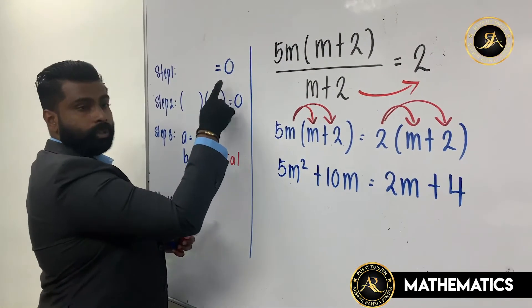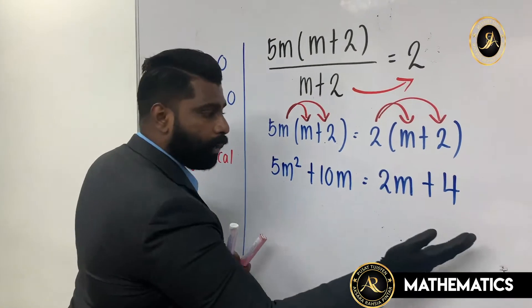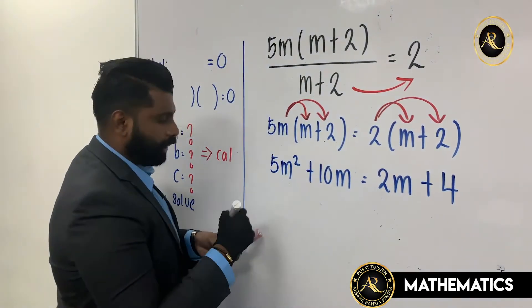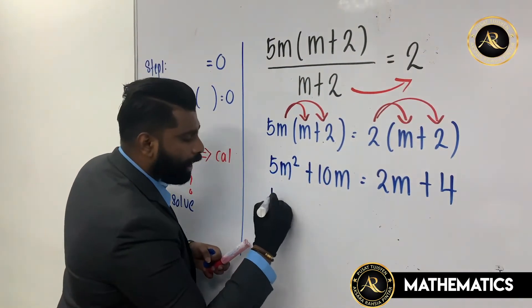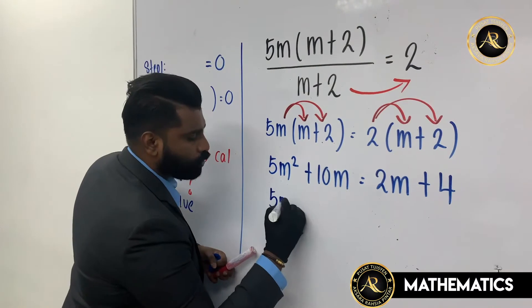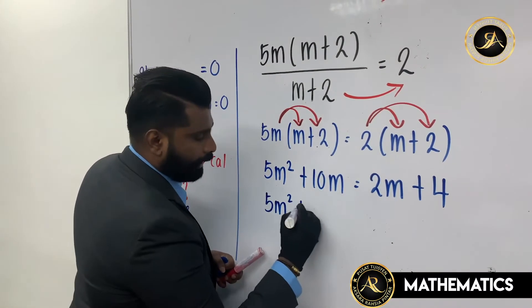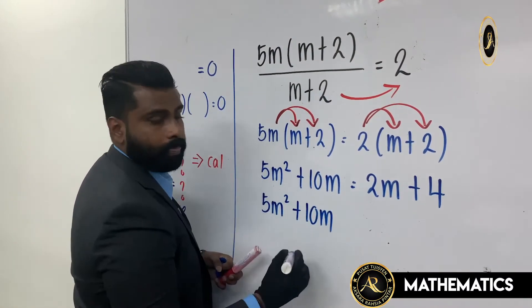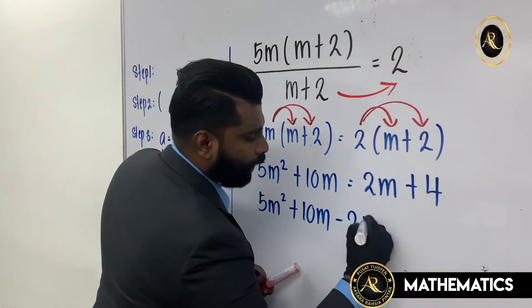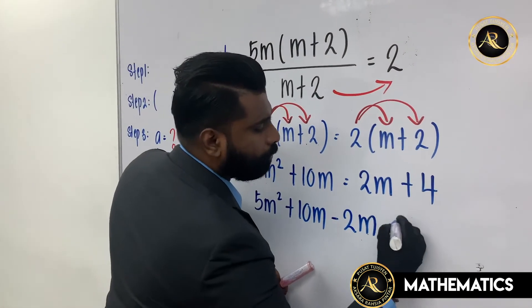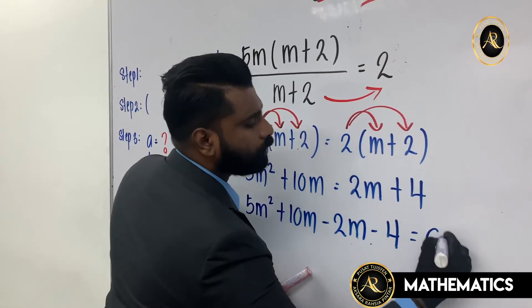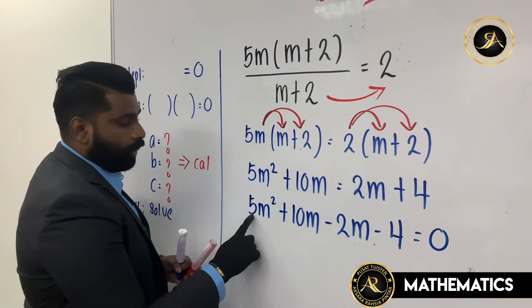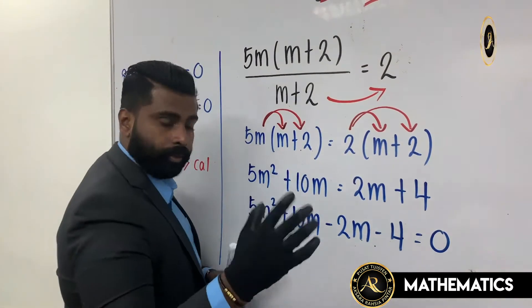Step number one says the equation must equal to zero. So we rearrange: 5m squared plus 10m minus 2m minus 4 equals to zero.